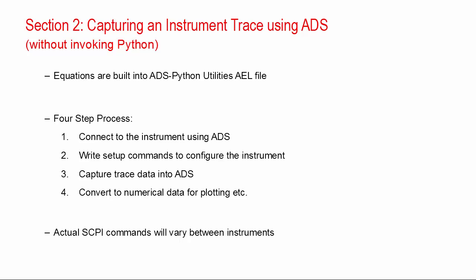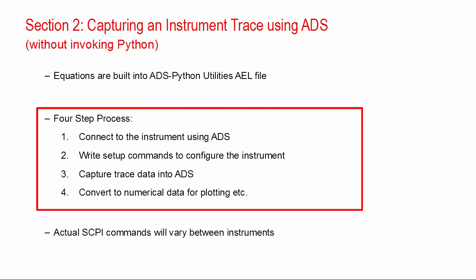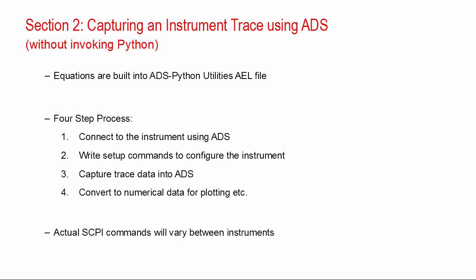In this section, I will overview a methodology to configure an instrument and capture a data trace all from inside ADS without involving a separate Python script, because the equations that I'm going to show are built into the Python utilities that you've loaded into ADS already. To capture a specific trace right out of the ADS data display, there are four steps. First, connect to the instrument, then write a series of setup commands. Next, capture a trace off the instrument, and finally convert this data into numerical ADS data. These steps should work for just about any instrument, but the exact SCPI commands to perform the operations will vary.